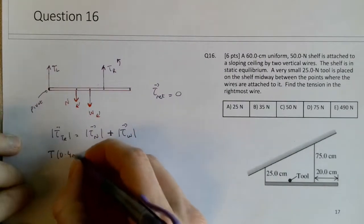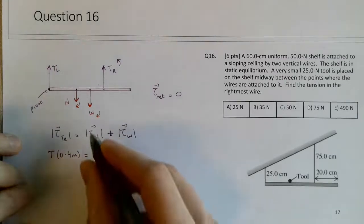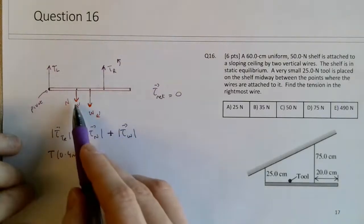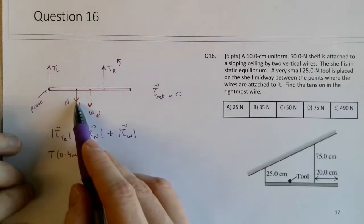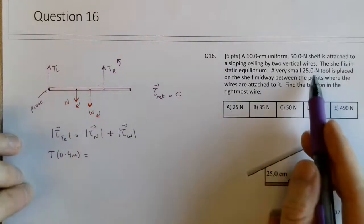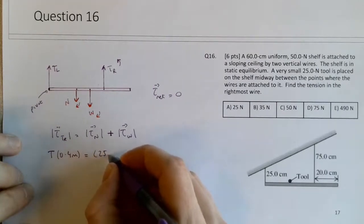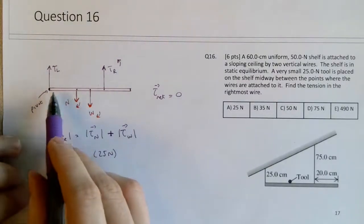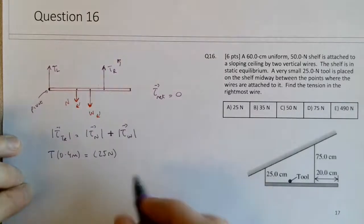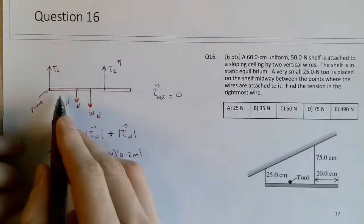This is equal to the normal force, which would be equivalent to the tool's weight. And it's a 25 Newton tool. So 25 Newtons. And it is going to be also 0.2 from the pivot point here.